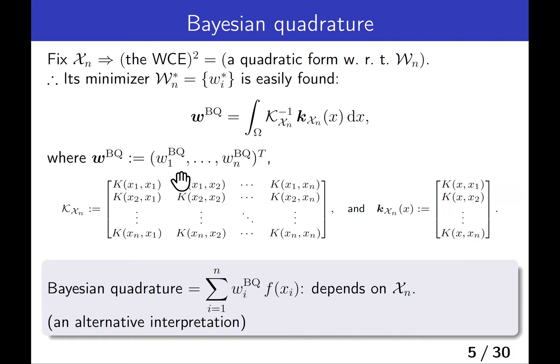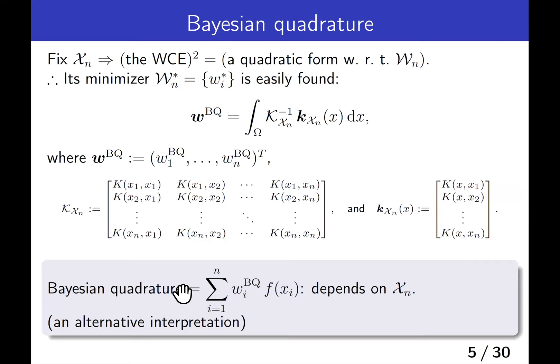If we fix the nodes, the squared worst-case error equals a quadratic form with respect to the weights. Therefore, its minimizer is easily found — it is given by this formula. The weight vector equals the inverse of the kernel matrix times the integral of this vector-valued function. So the Bayesian quadrature formula is given by these weights, which is an alternative interpretation of Bayesian quadrature explained in the previous talk.